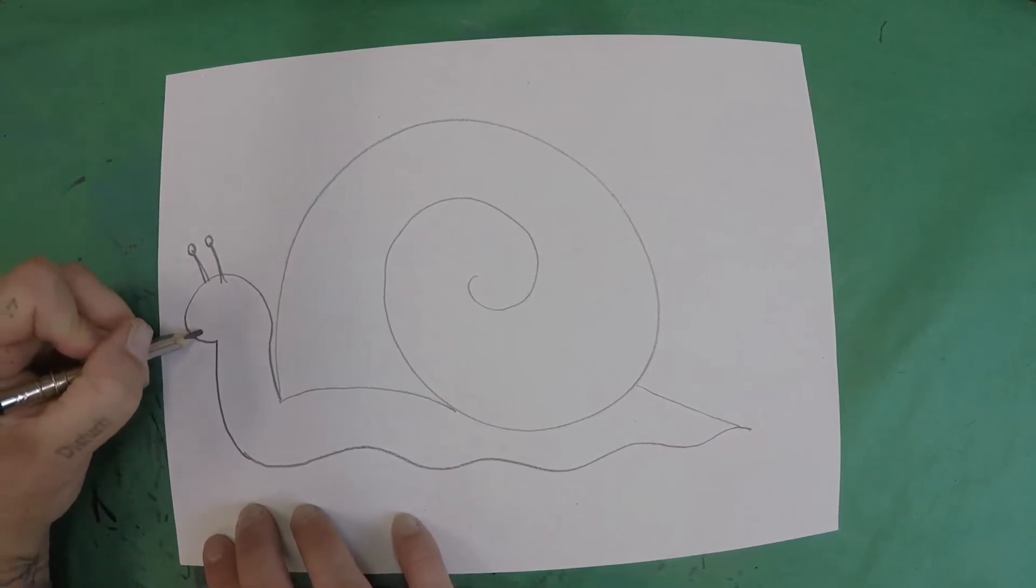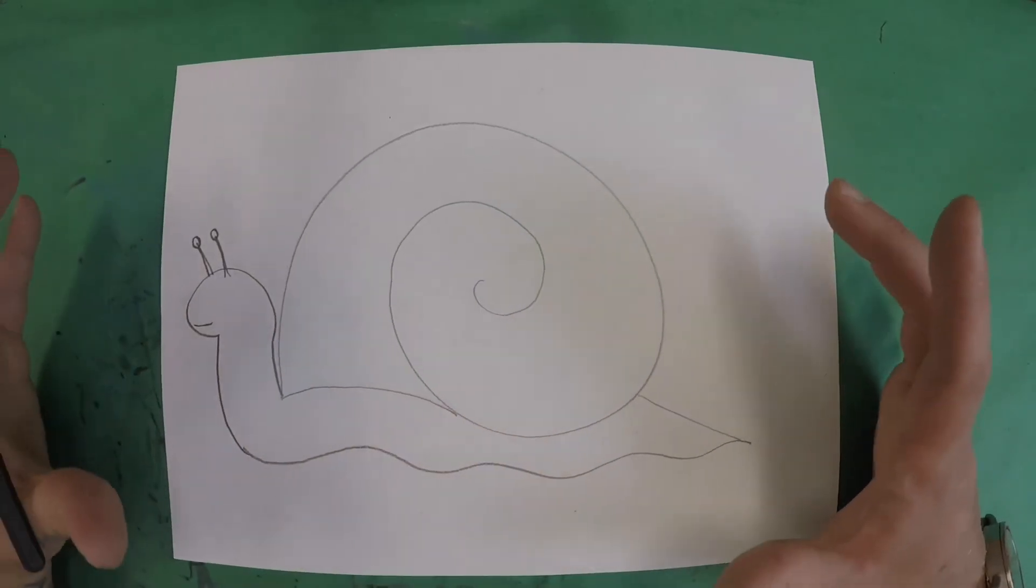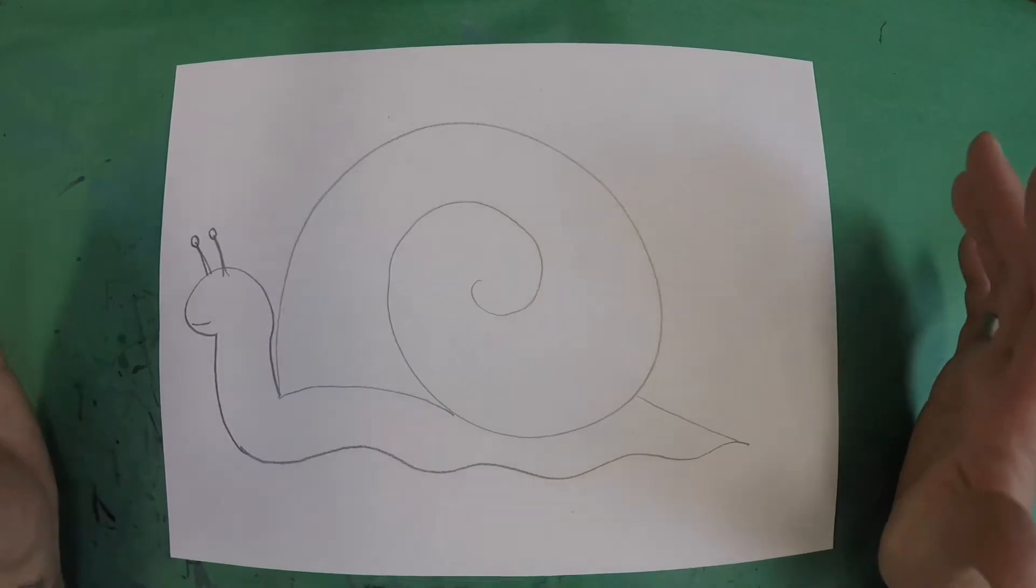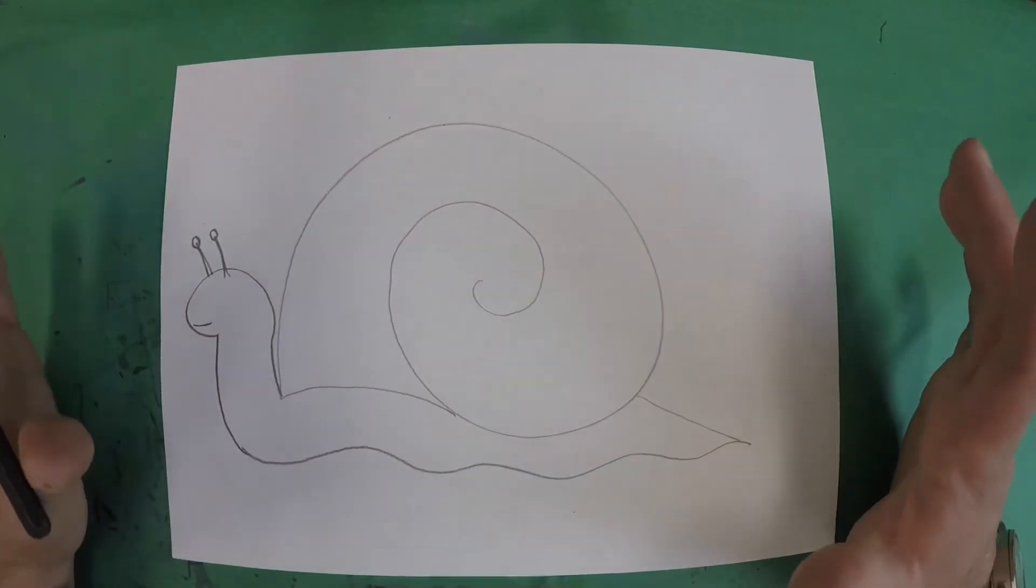Snails have a mouth. We can just show that with a line. We don't have to be super crazy detailed about that. So this creates our emphasis. This is our snail. Now we've got a few other things we want to draw. Starting with our horizon line.